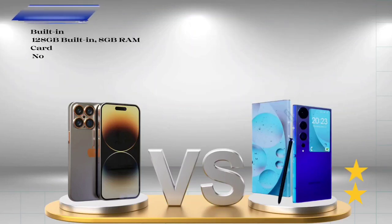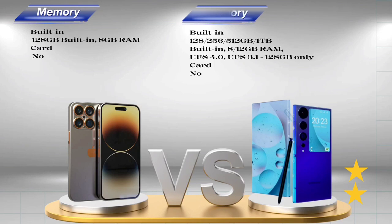Memory — iPhone 15 Ultra: Built-in 128 GB storage, 8 GB RAM. No card slot. Samsung Galaxy S23 Ultra: Built-in 128 GB to 1 TB storage, 8/12 GB RAM, UFS 4.0 (UFS 3.1 for 128 GB only). No card slot.